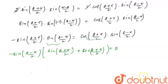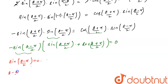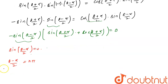Now we put each factor individually equal to zero. If we put sin((θ-α)/2) = 0, we know that sin θ = 0 at nπ, so (θ-α)/2 = nπ, and from here θ = 2nπ + α.